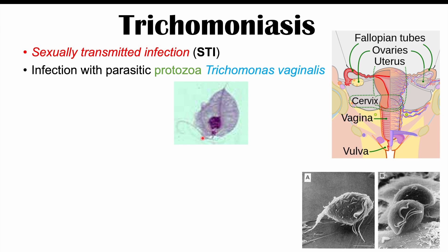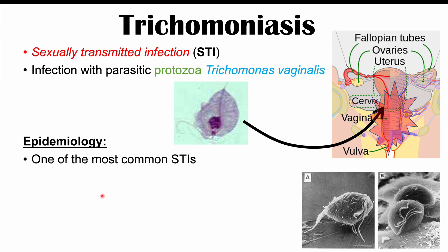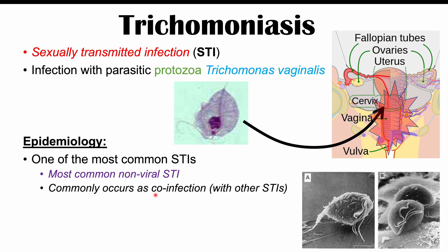These organisms can spread from individual to individual through sexual contact and cause infection. Trichomoniasis is one of the most common STIs — in fact, it is the most common non-viral STI — and it commonly occurs as a co-infection with other STIs like chlamydia and gonorrhea.